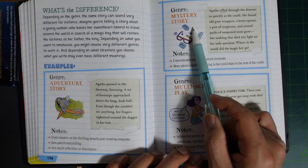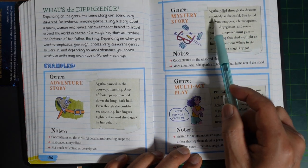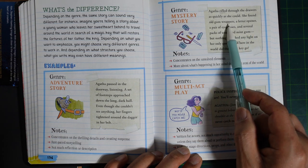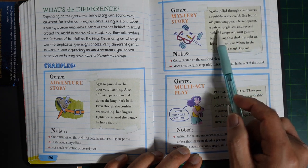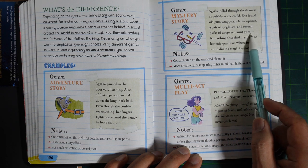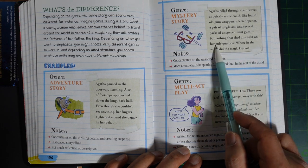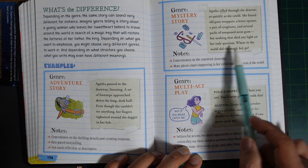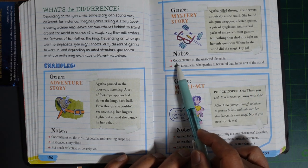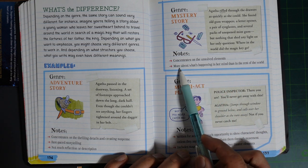Genre: Mystery Story. Agasa rifled through the drawers as quickly as she could. She found old gun wrappers, letter openers, a pair of eyeglasses, and several packs of unopened mint gum, but nothing that shed any light on the omnipresent question: Where in the world did the magic key go? Notes: Concentrated on the unsolved element. More about what's happening in her mind than in the rest of the world.